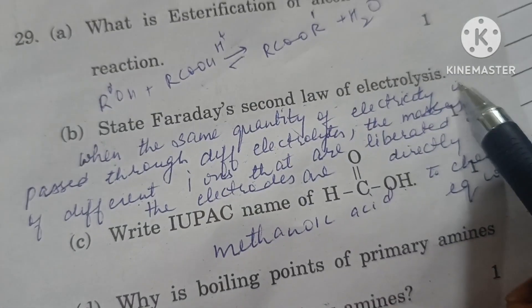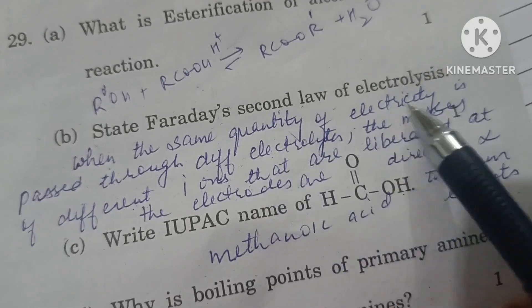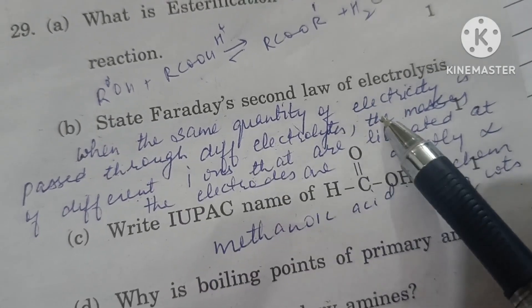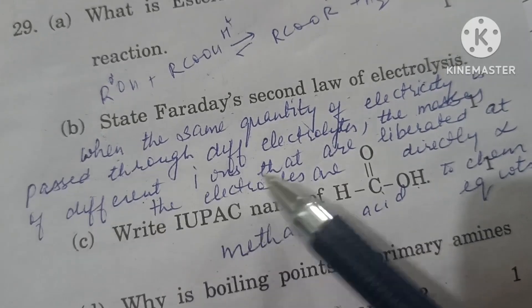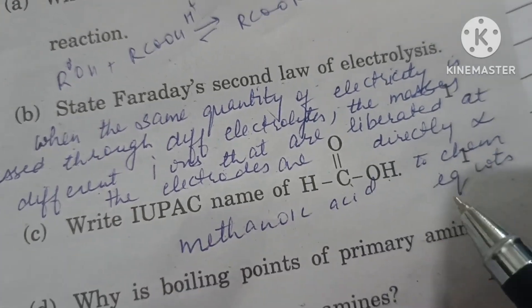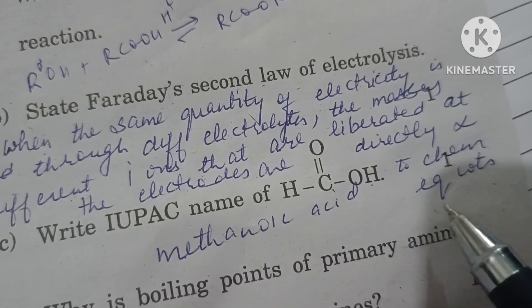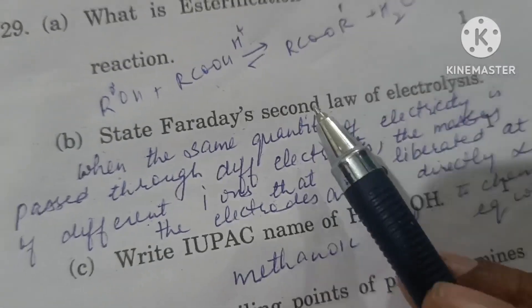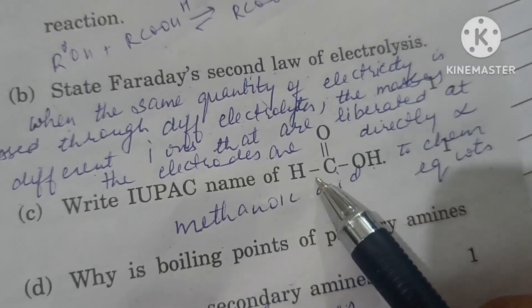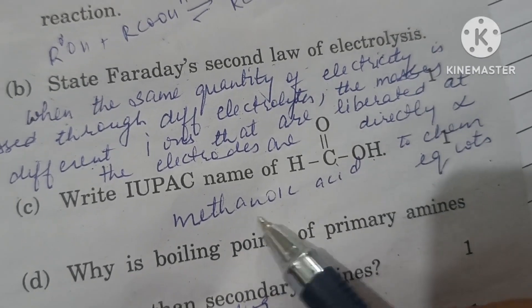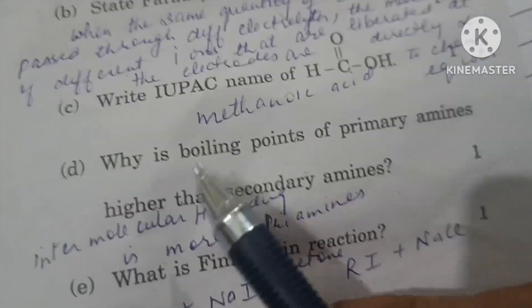State Faraday's second law of electrolysis. When the same quantity of electricity is passed through different electrolytes, masses of different ions that are liberated at electrodes are directly proportional to their chemical equivalent weights. This is the second law. IUPAC name of HCOOH will be methanoic acid, a carboxylic acid.